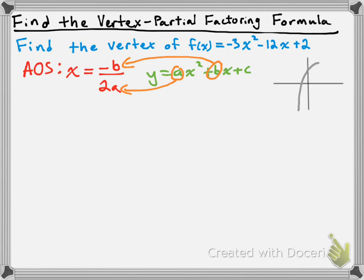Let's take a look at a diagram. Here I have a parabola that opens down, so the vertex is going to be the highest point. The parabola is symmetrical around the axis of symmetry, which means the axis of symmetry passes straight through the vertex. So if I know my axis of symmetry, I actually know what the x-value of my vertex is. By using the axis of symmetry formula, we're really calculating the x-value of the vertex.